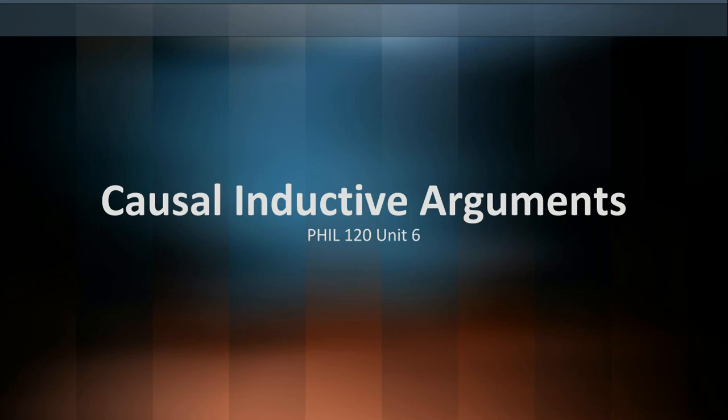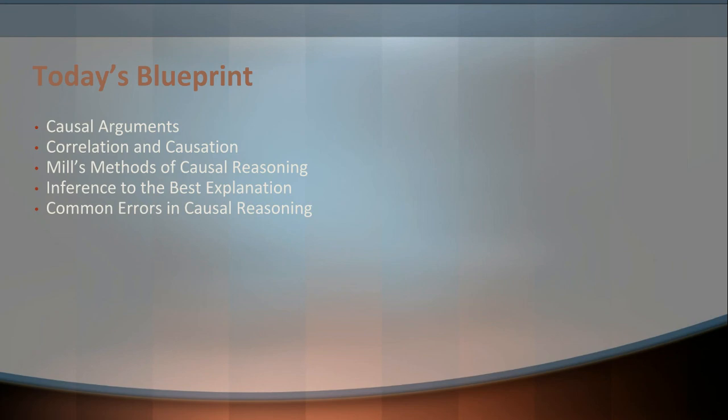Hey folks, and welcome back to the video lectures for Philosophy 120, Critical Thinking, where we look at causal inductive arguments today. What we're going to do today is look at what a causal argument is, the concepts of correlation and causation, a few methods of causal reasoning, a specific example called inference to the best explanation, and some common errors in causal reasoning, all as we continue this unit about induction and inductive arguments.